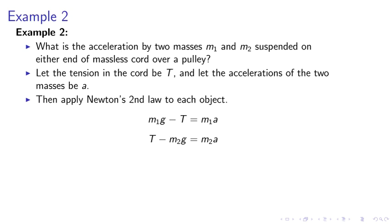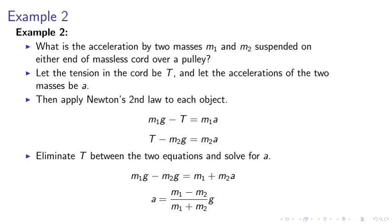Then apply Newton's second law to each object. M1g minus T equals M1a, T minus M2g equals M2a. Eliminate T between the two equations and solve for A. We finally obtain A equals M1 minus M2 divided by M1 plus M2 times g.